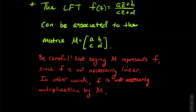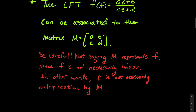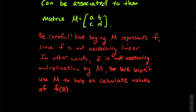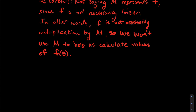There could be more than one matrix M associated to the same linear fractional transformation, so there isn't a one-to-one correspondence. If anything, there's a surjection from the set of matrices onto the set of linear fractional transformations — essentially more matrices than there are LFTs. We're not using M to compute an LFT via matrix multiplication.